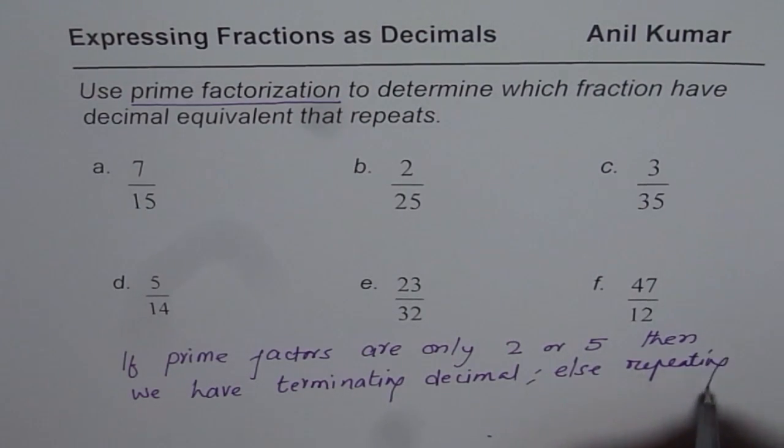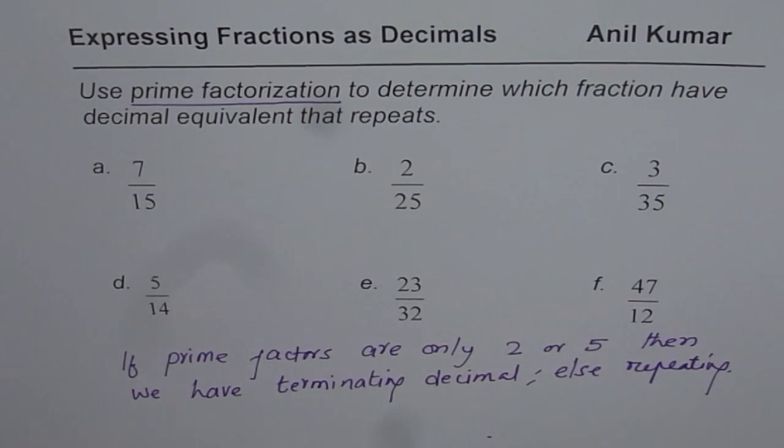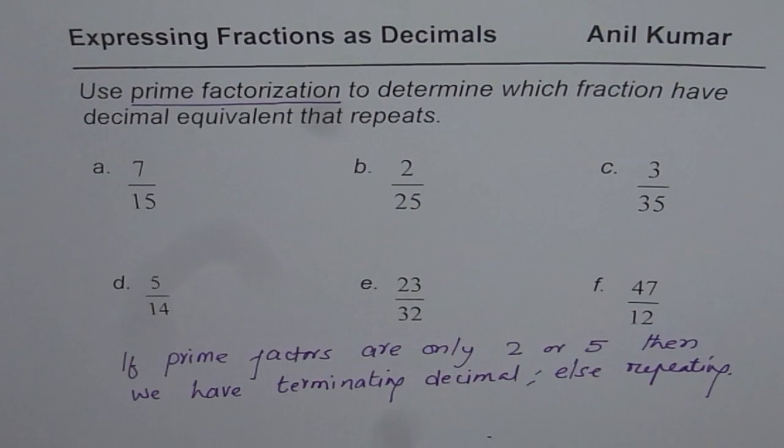The decimals could be either terminating or repeating. So the idea is once you do prime factorization, check if the prime factors are 2 or 5 only. If they are not 2 and 5 only, then the fraction will have equivalent repeating decimal.